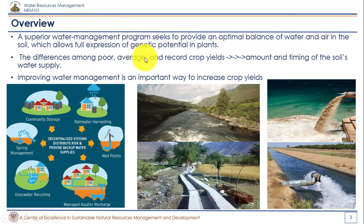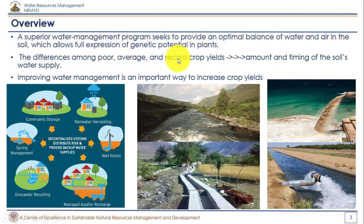When we balance water, air, and soil in a field with crops, those crops are going to express their full genetic potential because they get full access to water, air, and soil. The main difference between poor yields, average yields, and record-breaking yields is due only to the amount and timing of the soil water supply. Water is very important in the expression of genetic potential of any crop or plant.